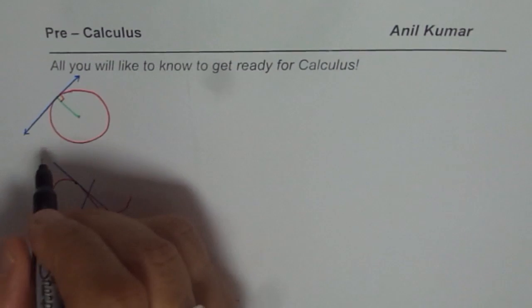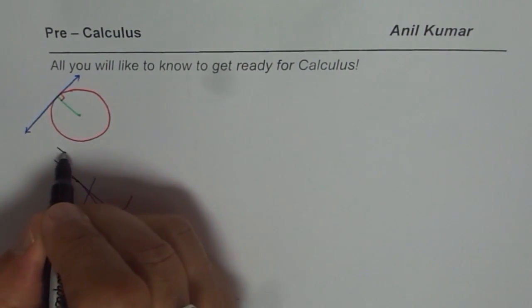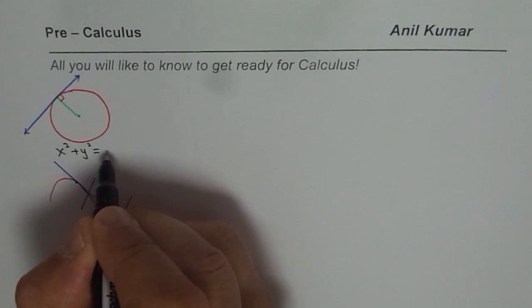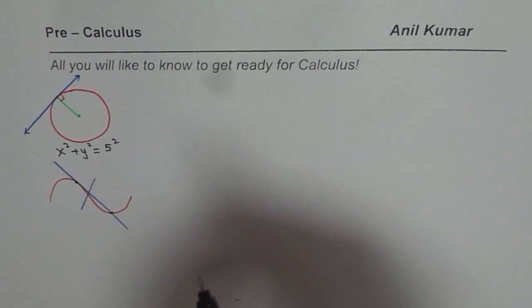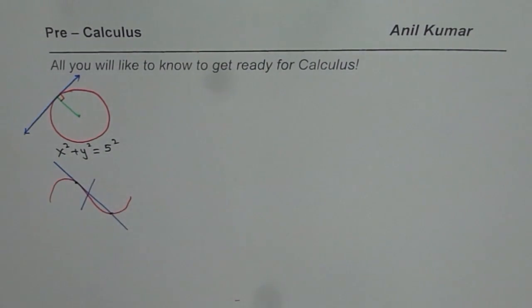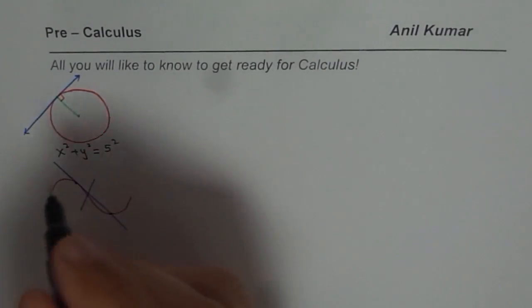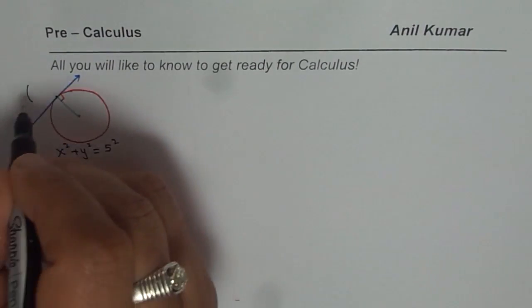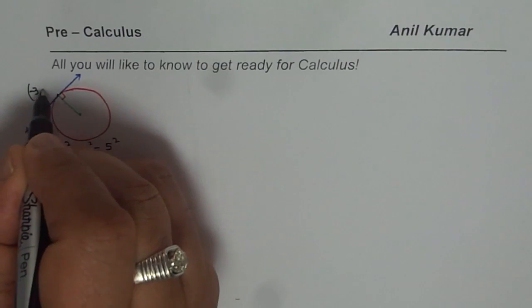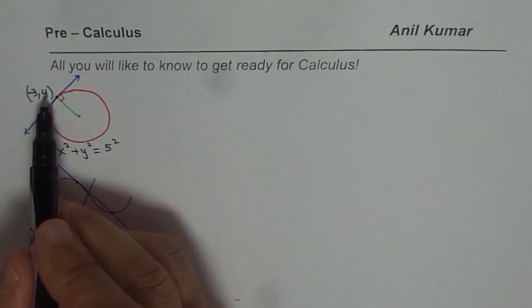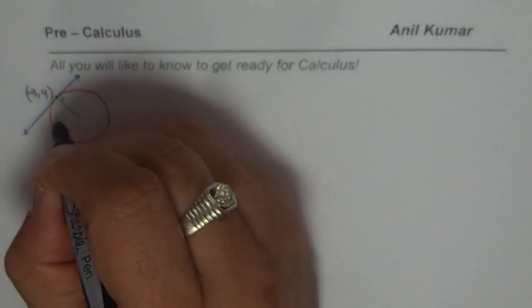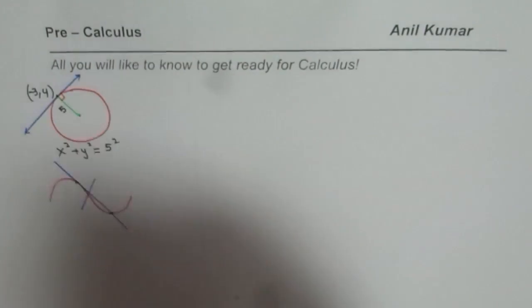I'm not making it complicated at all. The equation of my circle is x square plus y square equals to five square. That is simplest of all - center is at the origin. Let me call this point minus three and four. Three square plus four square square root gives me five the radius. We know that the radius of the circle is five units.